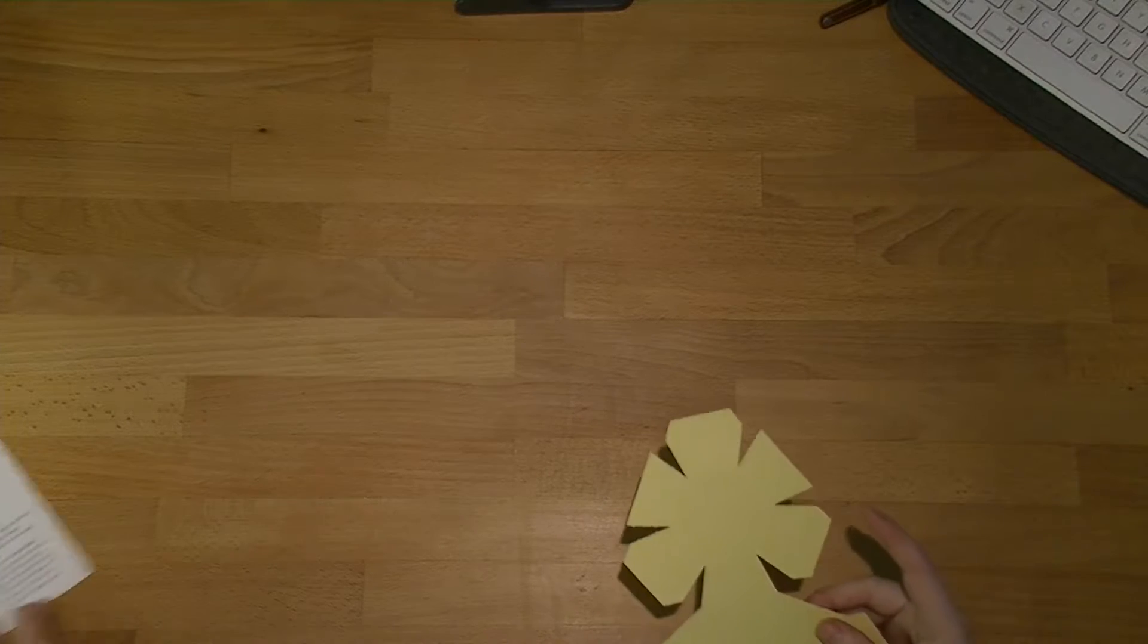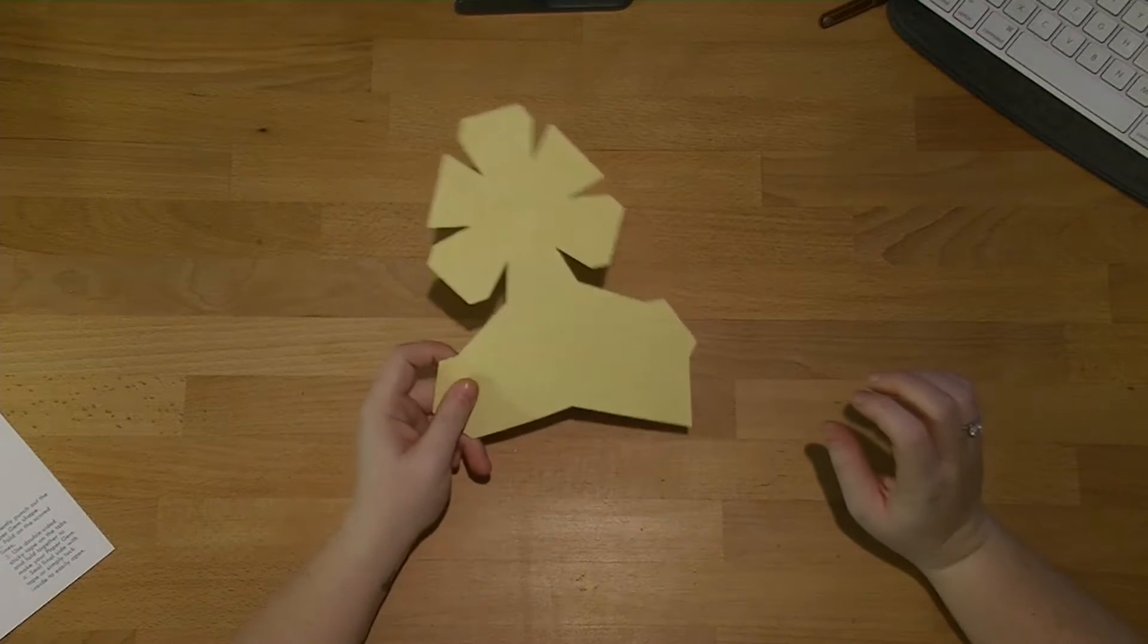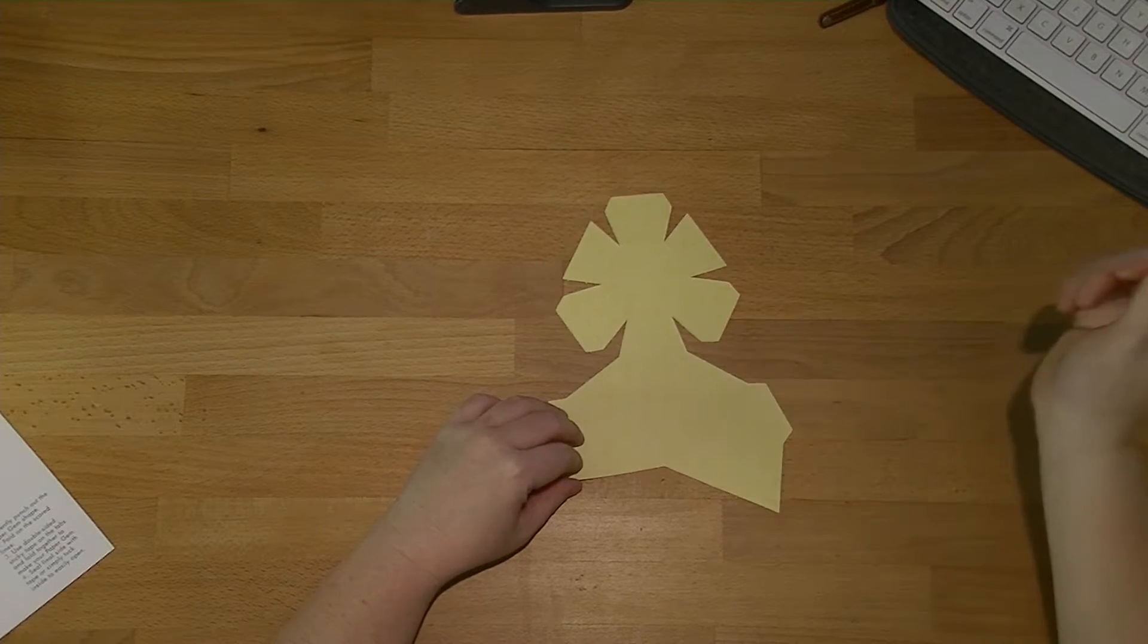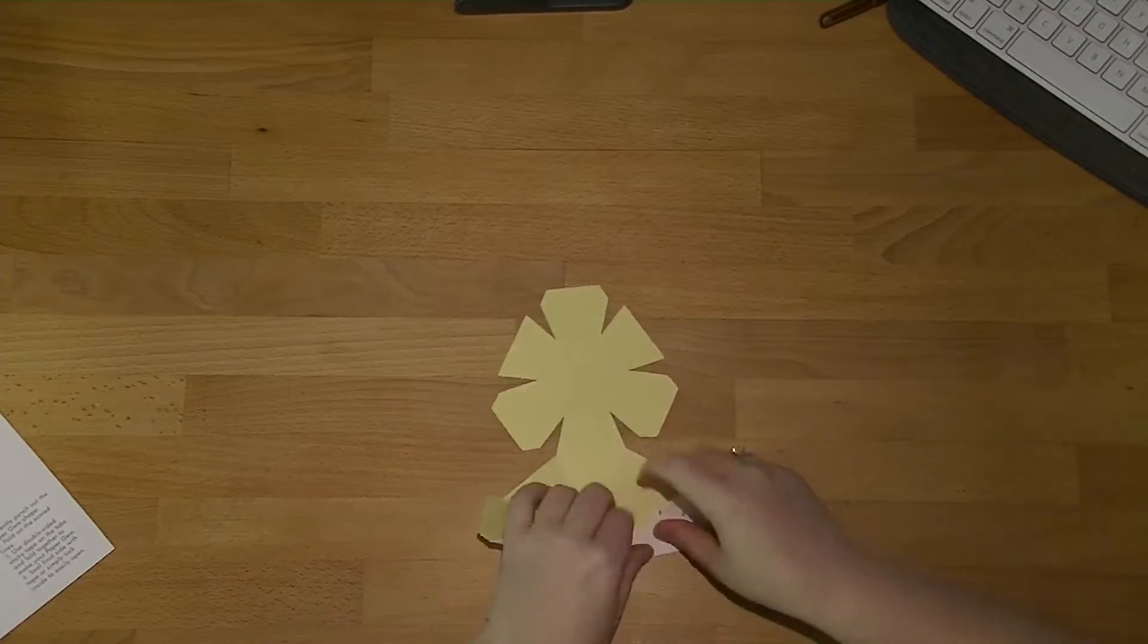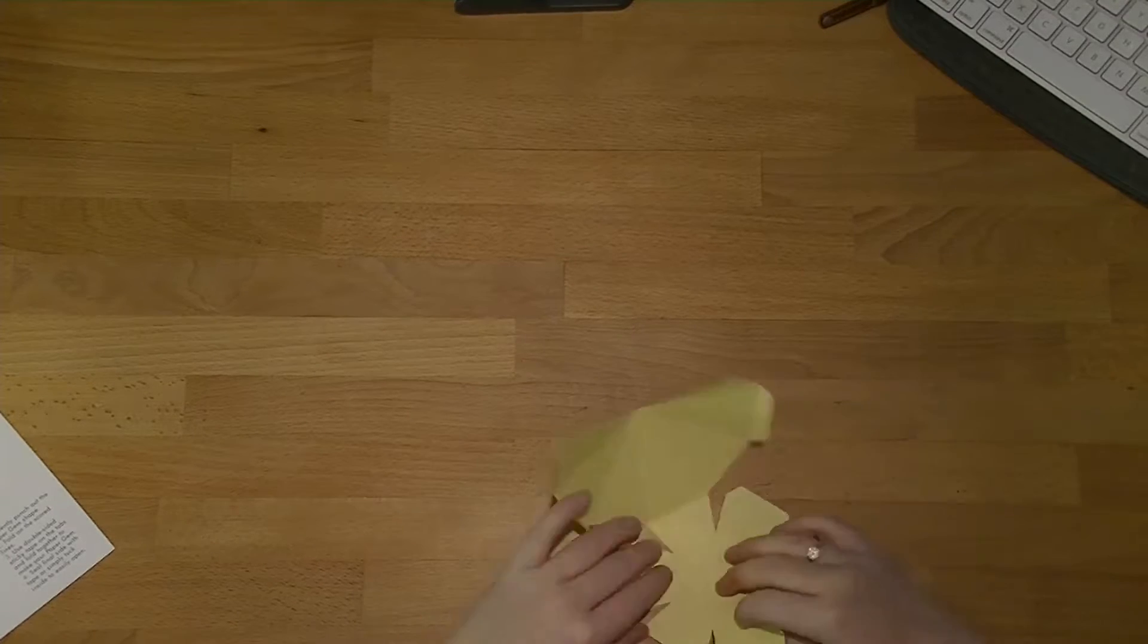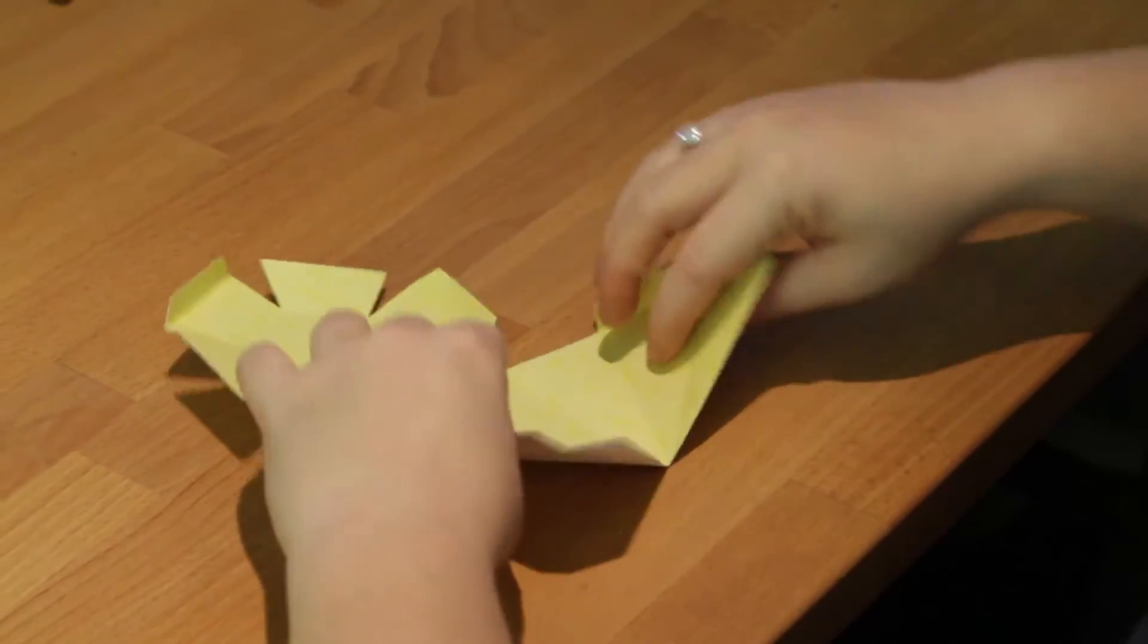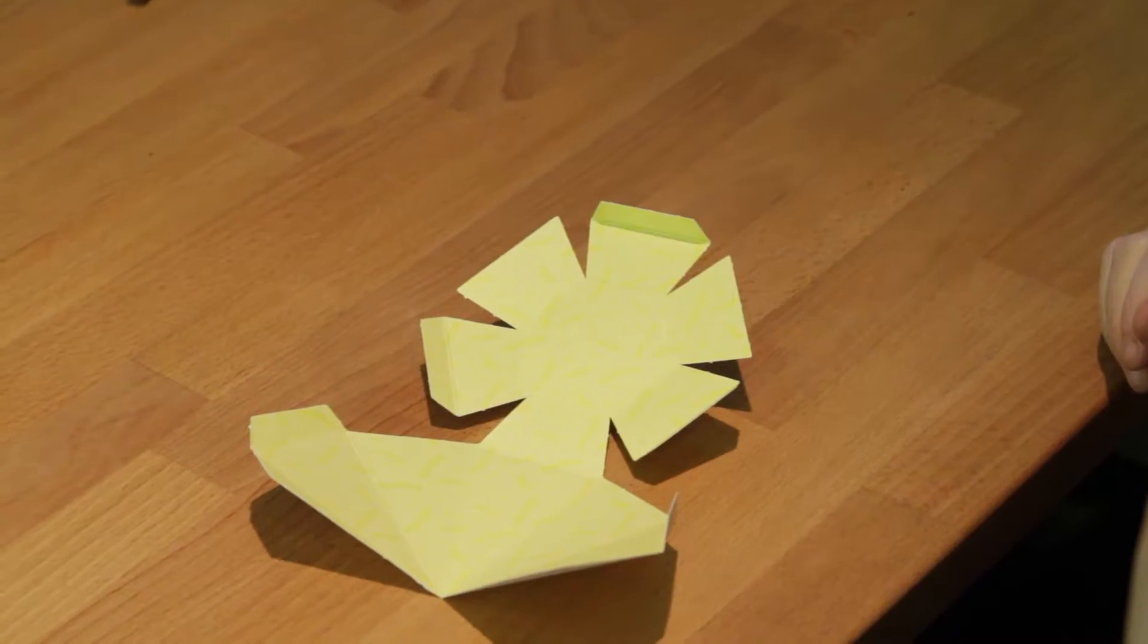The instructions say to, number one, gently punch out the shape and then fold on the scored lines. So I'm going to go ahead and fold all of these and I'll be back in just a second. Okay, so that's all of the bits folded.